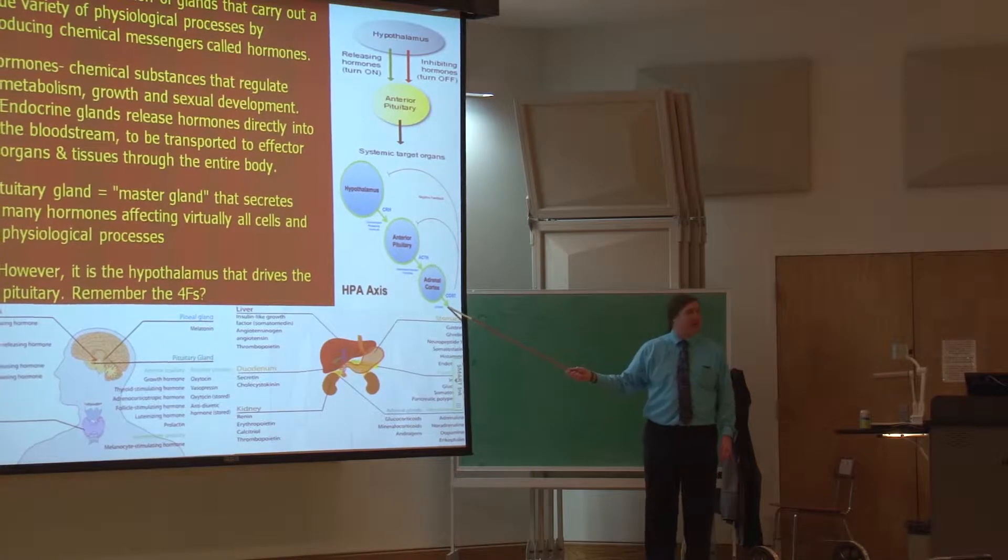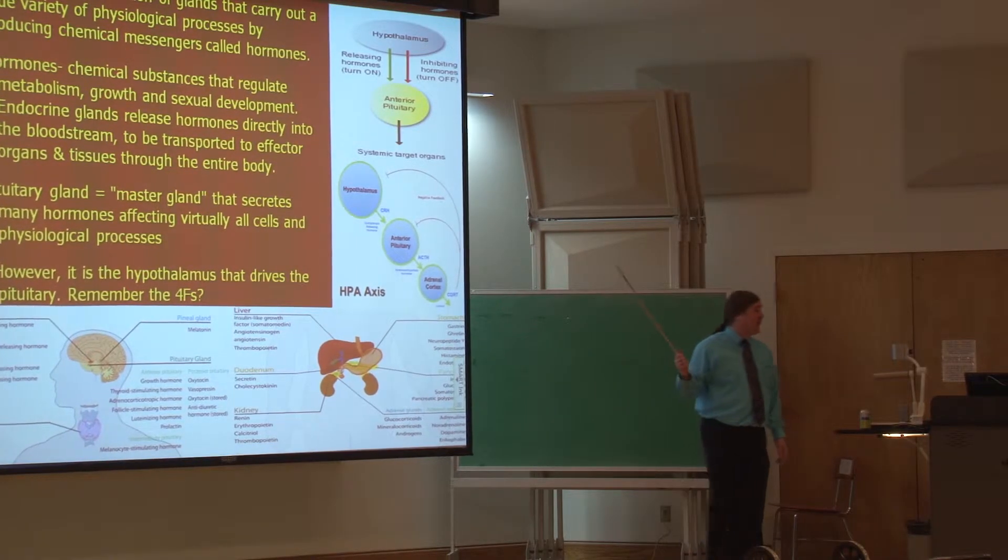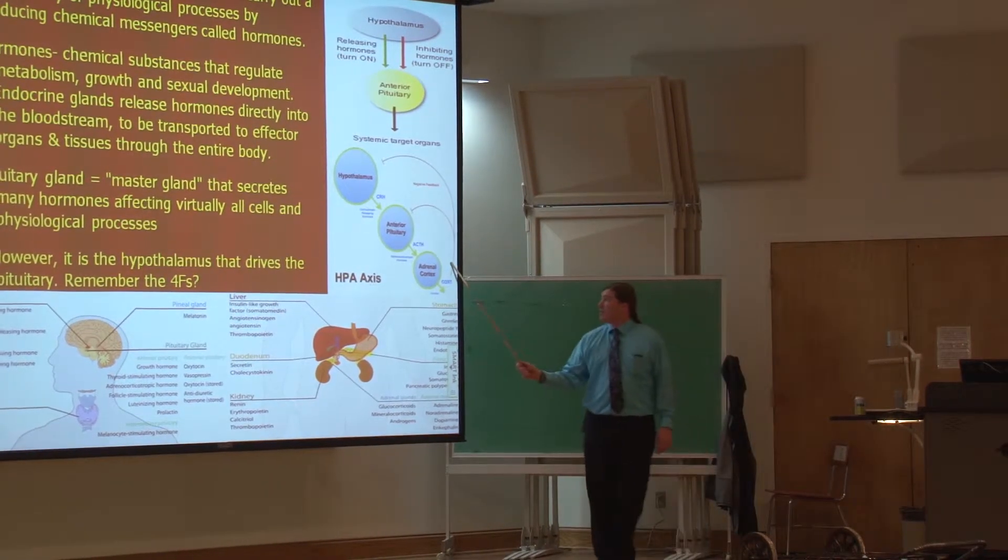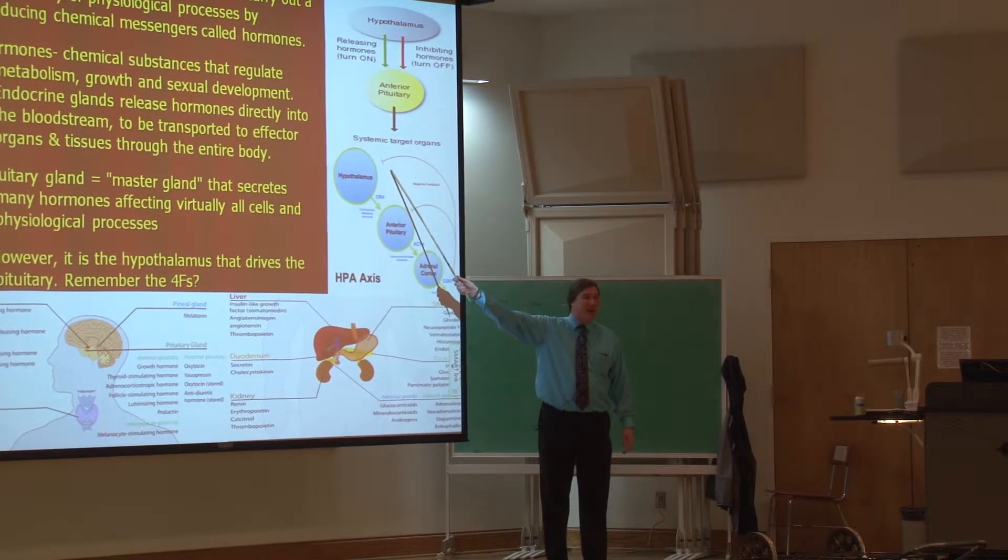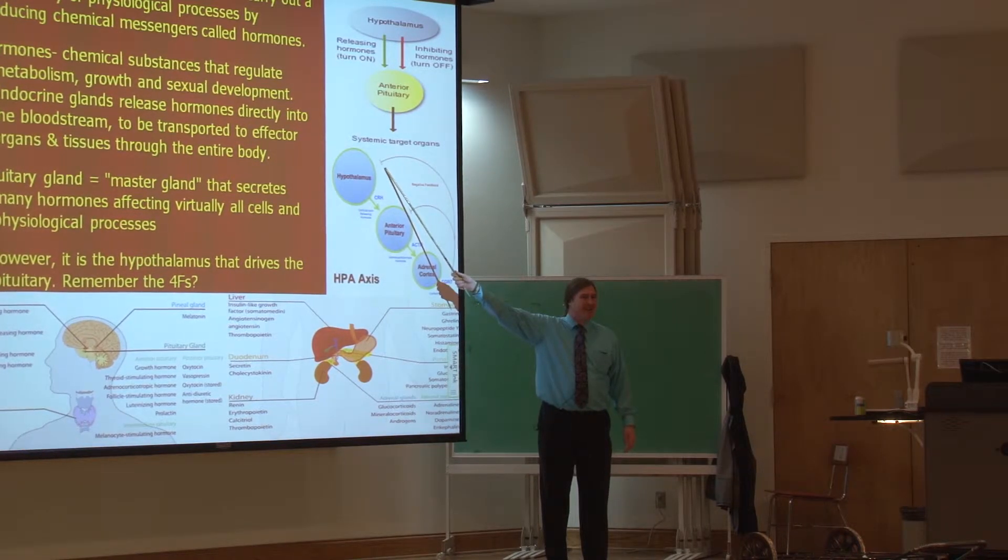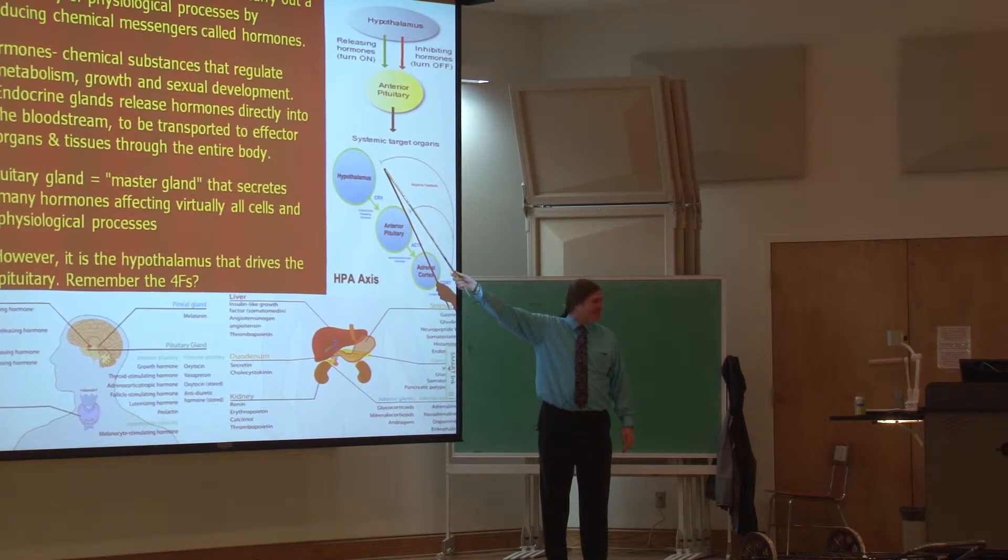And then that's going to release cortisol in addition to other things like epinephrine, adrenaline, and norepinephrine, noradrenaline, where the release of those is going to come back to the brain and be read by the hypothalamus and say turn it off now. Optimal levels have been reached. That's stunning.